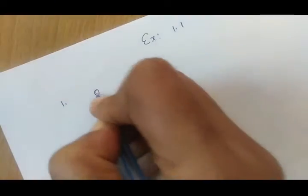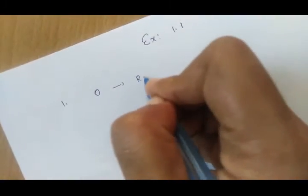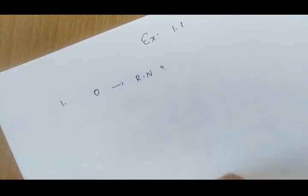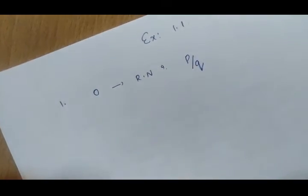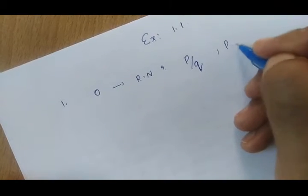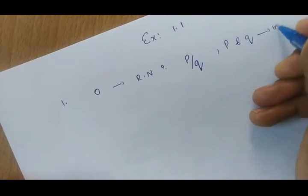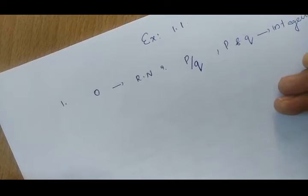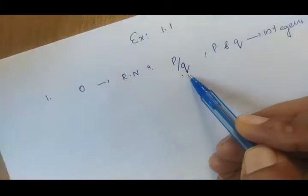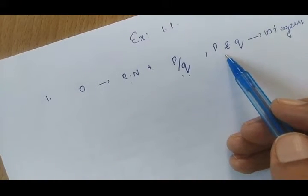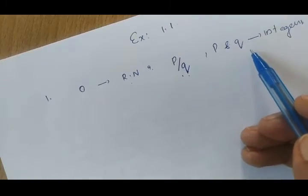First question is: is 0 a rational number? Can you write it in the form of P by Q where P and Q are integers?